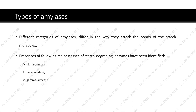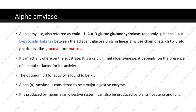Now let us see the different types of amylases. Different categories of amylases differ in the way they attack the bonds of the starch molecules. The following major classes of starch-degrading enzymes have been identified: alpha amylase, beta amylase and gamma amylase. Alpha amylase, also referred to as Endo-1,4-α-D-glucan glucanohydrolase, randomly splits the 1,4-α-D glycosidic linkage between adjacent glucose units in the linear amylose chain of starch to yield products like glucose and maltose. It can act anywhere on the substrate.